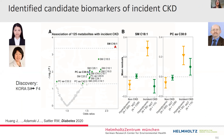This theme continues with ongoing work using metabolites as indicators for risk of developing type 2 diabetes complications. This is a recent example from Jurek Adamski together with Ruivang Sadler and her PhD student, showing the potential to disentangle those people who develop complications of type 2 diabetes from those who do not.